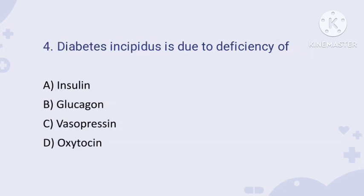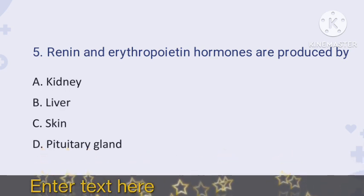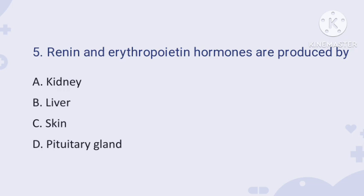Question number four: diabetes insipidus is due to deficiency of — options are A: insulin, B: glucagon, C: vasopressin, D: oxytocin. Diabetes insipidus is a disorder caused due to the deficiency of a pituitary hormone known as vasopressin, also called ADH (anti-diuretic hormone). Therefore, the right answer is option C.